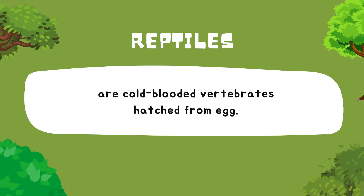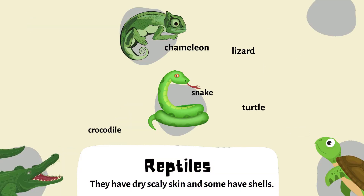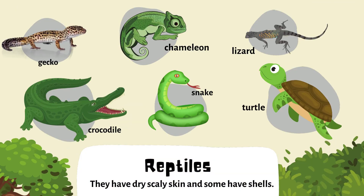The last group of animals is reptiles. Reptiles are cold-blooded vertebrates hatched from egg. They have dry, scaly skin, and some have shells, such as gecko, chameleon, lizard, crocodile, snake, and turtle.